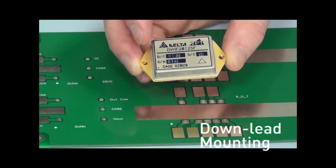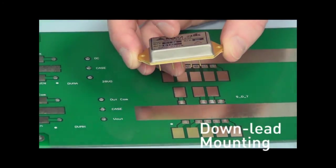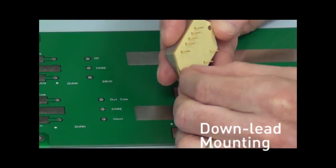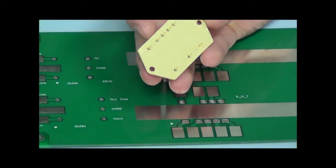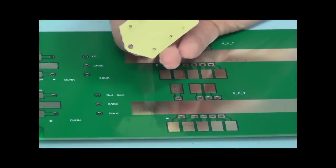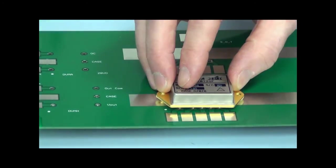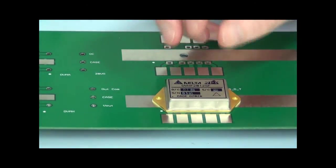The down-leaded part is typically mounted to a printed circuit board. We recommend a thermal pad which provides both good thermal transfer and isolation from the printed circuit board. So here it's mounted to the printed circuit board and soldered on the backside.